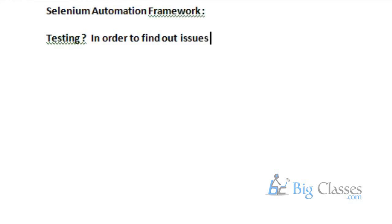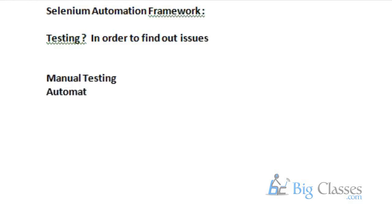In this software development life cycle process, we have a testing phase. Testing is nothing but to find out the issues and to improve the quality of an application. To do testing in the market, as per market standards, we have two ways: one is manual testing and the other one is automation testing.